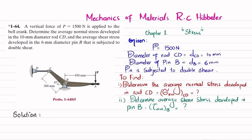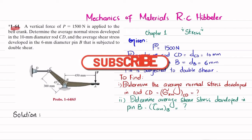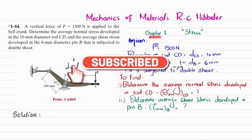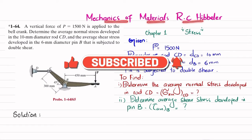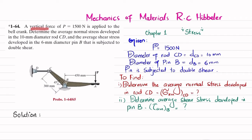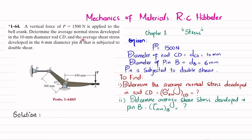Welcome back. Problem 1-64 is taken from Chapter 1, Stress, from the book Mechanics of Materials by R.C. Hibbeler. The statement is: a vertical force of P = 1500 N is applied to the bell crank. Determine the average normal stress developed in the 10 mm diameter rod CD, and the average shear stress developed in the 6 mm diameter pin B.